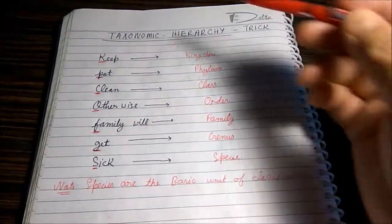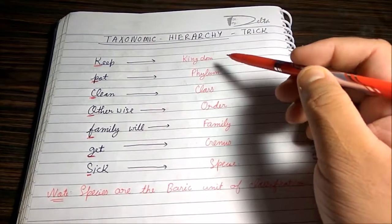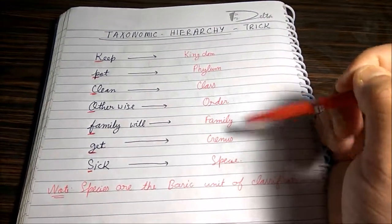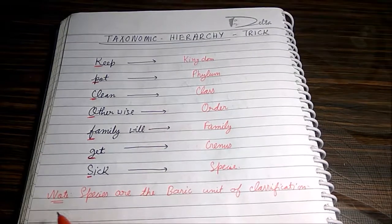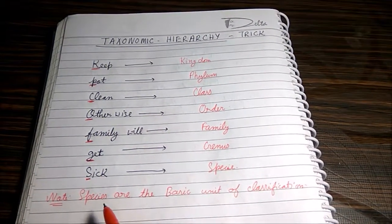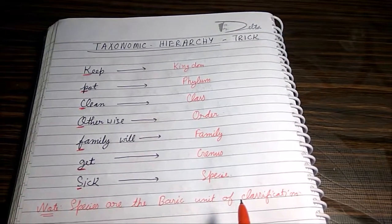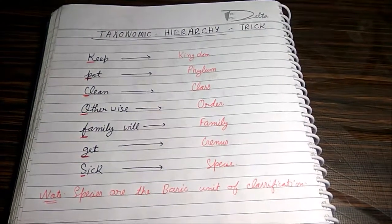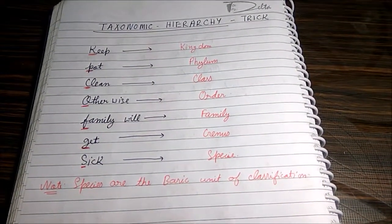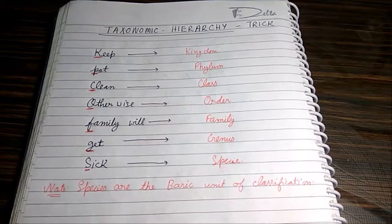This is the trick you have to remember for recalling this whole sequence in the correct order. There is a note also: Species are the basic unit of classification — that you have to remember.